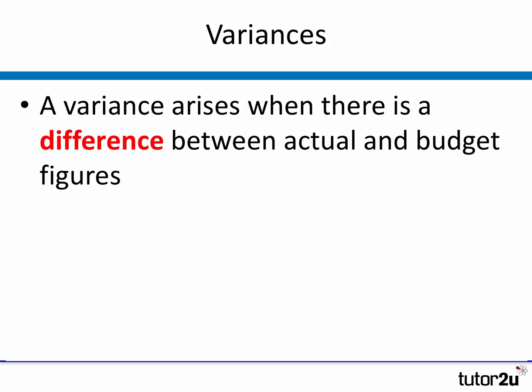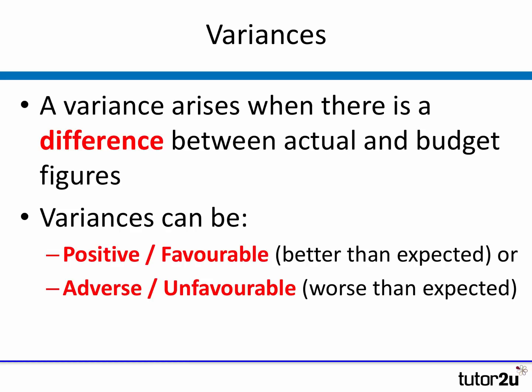A variance is a difference between actual and budget, and there are two key types. The first is where things are better than expected — these are known as favorable variances. For example, sales being higher than expected would be good news for the business. The second type is known as adverse variances, which happens when the actual results are worse than expected.